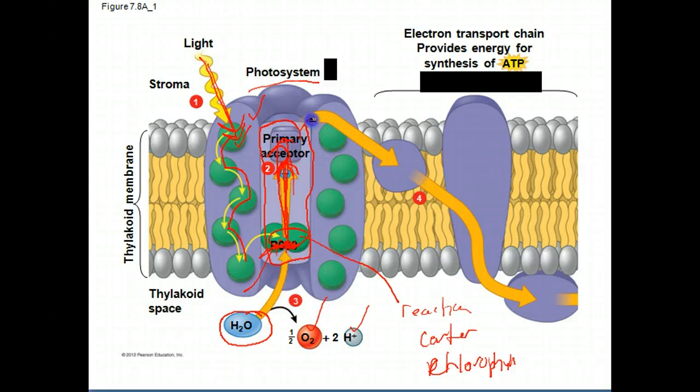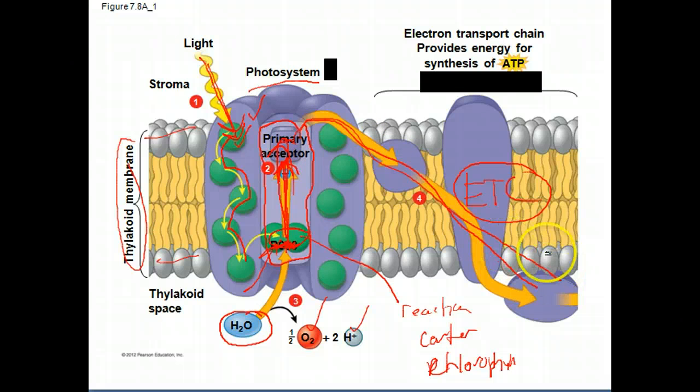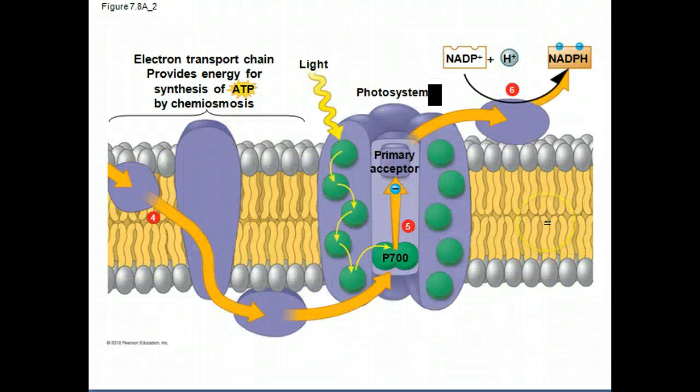Those electrons are then passed down the electron transport chain. So this part right here is the ETC. Remember this is all in the thylakoid membrane spanning right here. We have the ETC here - it's just a system of membrane proteins that carry electrons. They're going to get it from the primary electron acceptor and pass it down here.